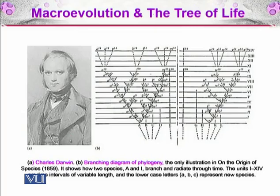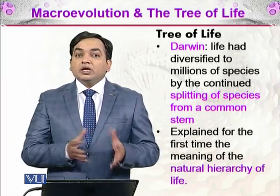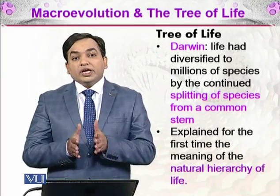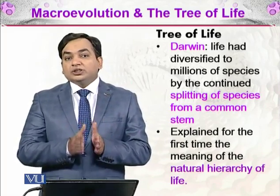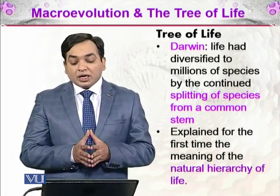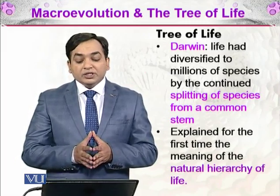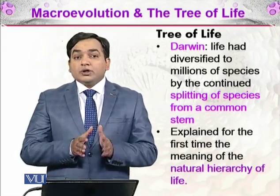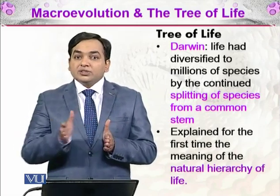This is the process of speciation that we will be discussing later. Darwin, as we have seen from the illustration, was thinking of life as a tree of life — that life has evolved just like a tree, where a stem develops into branches and branches are further dividing into further branches. First, the organisms were very simple, but as they evolved, they split into different species.